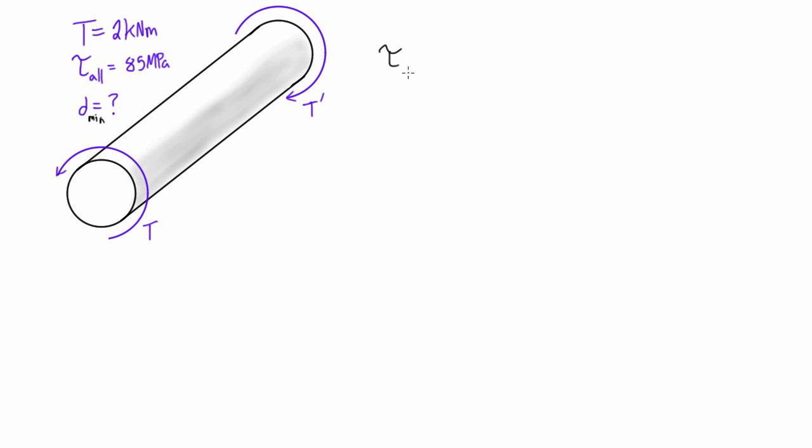So the way that we do this is we use our handy-dandy equation that we've been using in the past couple videos. We have the shear τ is going to be equal to T times c over J.